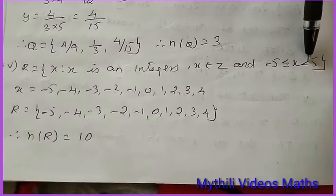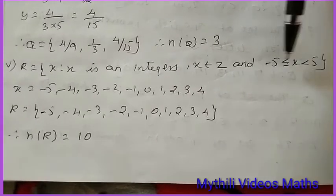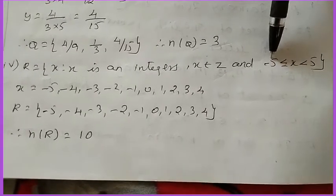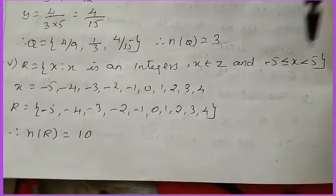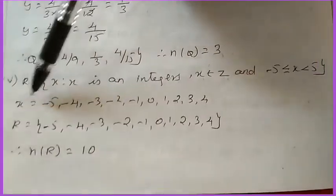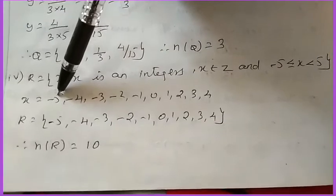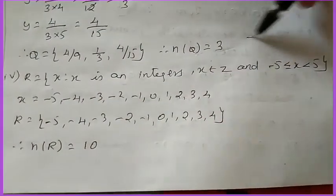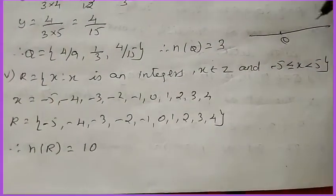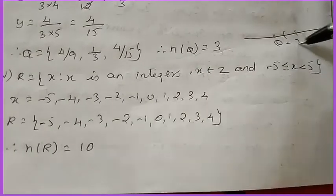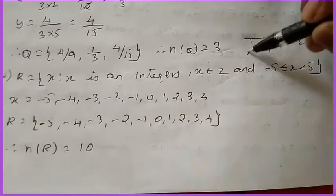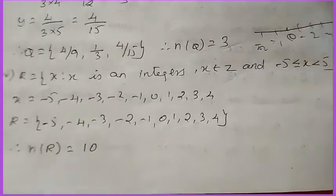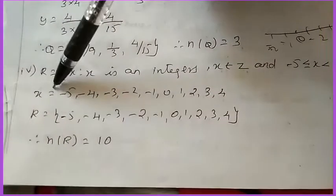So we have to take from minus 5 to till 4. See here, so x is equal to what are the numbers? Then minus 5, and then minus 4. We know graph, here 0 means 1, this number 2, 3, left-hand side minus 1, minus 2, minus 3 like that. So that graph number we can take here.